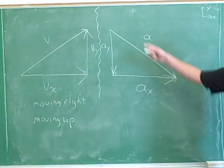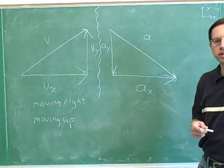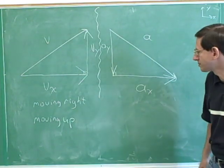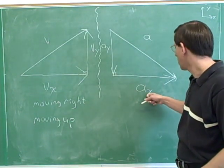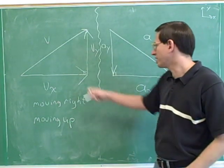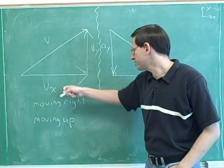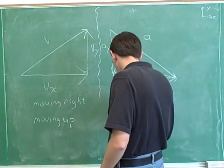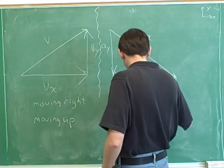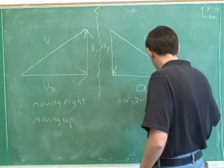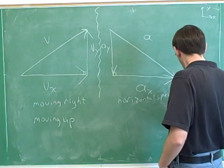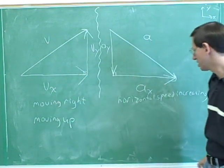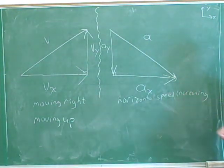Now, what information do we get from the acceleration vectors? The acceleration vectors don't tell us which way we're moving — they tell us whether we're speeding up, slowing down, or have constant speed. The horizontal acceleration is parallel to the horizontal velocity. Horizontal velocity is to the right and horizontal acceleration is to the right, which means we're speeding up horizontally. A sub x is pointing to the right and V sub x is also pointing to the right — when those vectors are parallel, the horizontal speed is increasing.